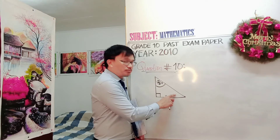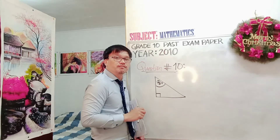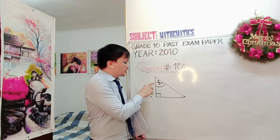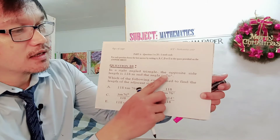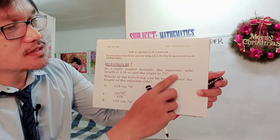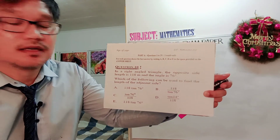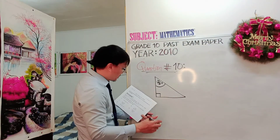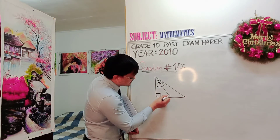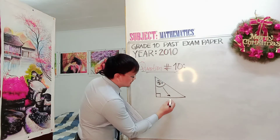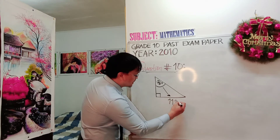Go back to the question to label using the given quantities. In the right-angled triangle, the opposite side length is 118 meters and the angle is 76 degrees. Since one angle is already 90 degrees, let's say this angle here is 76 degrees — its opposite side is 118 meters.